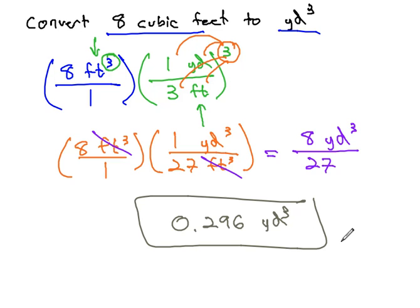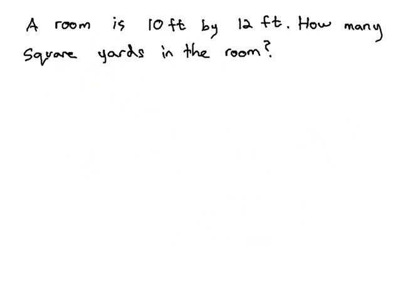Let's try another example, where we have to square or cube a conversion factor in order to make the units work. In this problem, we have a room that's 10 feet by 12 feet. We want to know how many square yards are in the room. First, we need to know the area of this room, so that we can make the conversion.